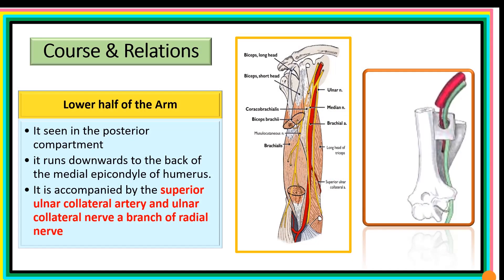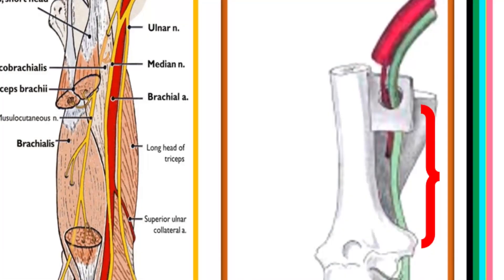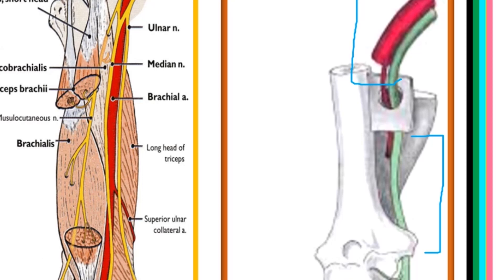In the lower half of the arm, the ulnar nerve runs in the posterior compartment, descending downwards to the back of the medial epicondyle. The ulnar nerve can be seen at the back of the medial epicondyle at this stage.